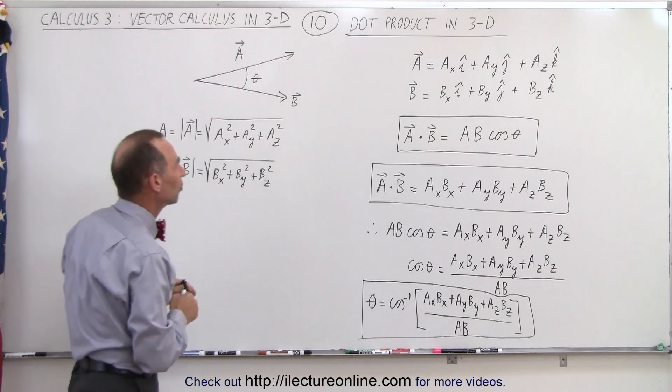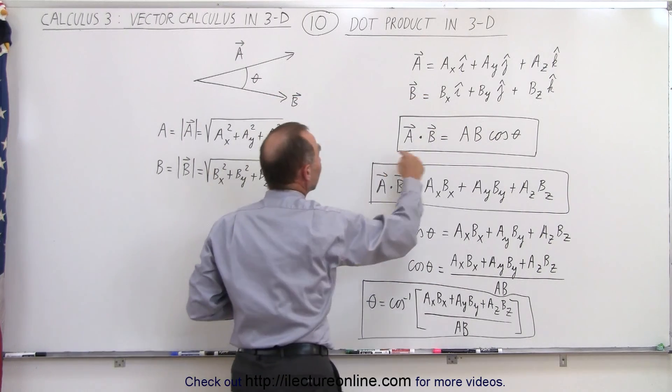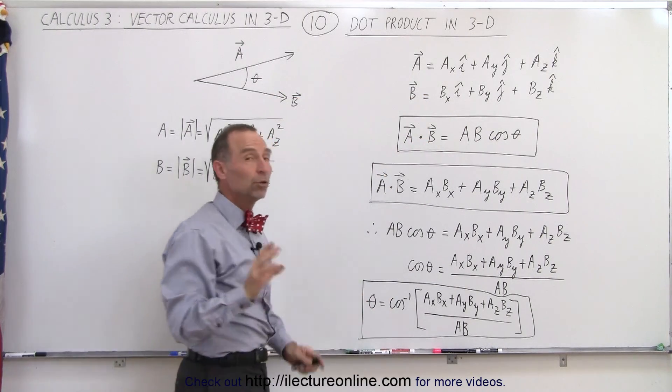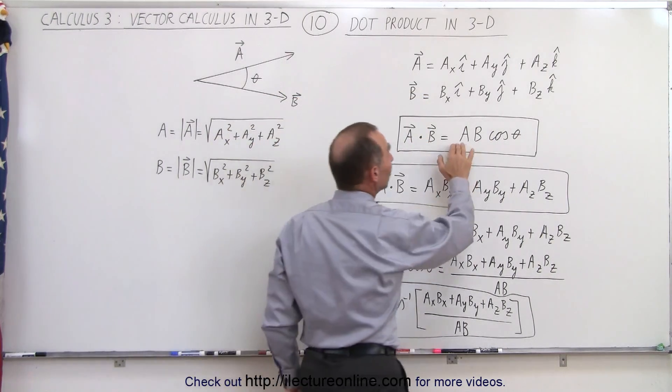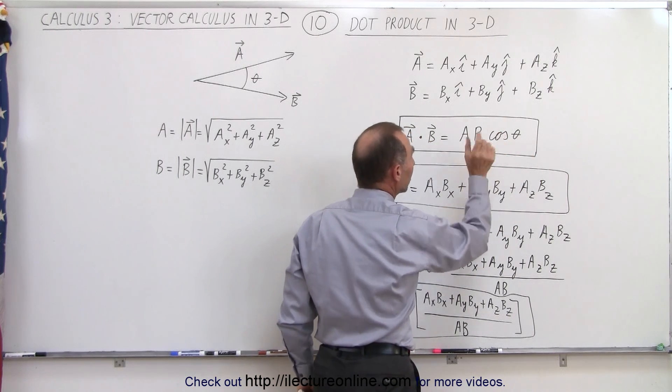Notice that the dot product gives us a scalar result. The dot product of two vectors is a scalar, not a vector.